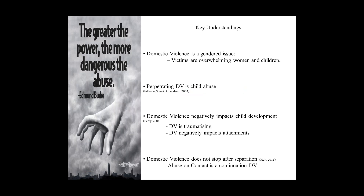Domestic violence is a gendered issue, and it's targeted at what is perceived as being weak victims within our society — so that's women and children. We need to understand and elevate DV to the knowledge of being child abuse, and that really impacts the development of children. It traumatises them in terms of their neurological development and it also negatively impacts their attachments. Domestic violence is an interpersonal type of trauma — it really defines how young people go on to interact with people throughout their life. Domestic violence doesn't stop after separation. Abuse on contact is just a continuation of this, providing a new opportunity to continue to abuse the mum, and kids are then having unsupervised contact with a DV perpetrator and continue to be abused as well.